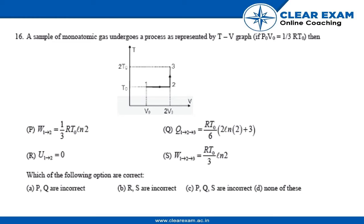Hello everyone. The question says a sample of monatomic gas undergoes a process as represented by a T-V graph. We are given that p0·v0 = (1/3)·R·T0, and we need to find which of the given statements are true.